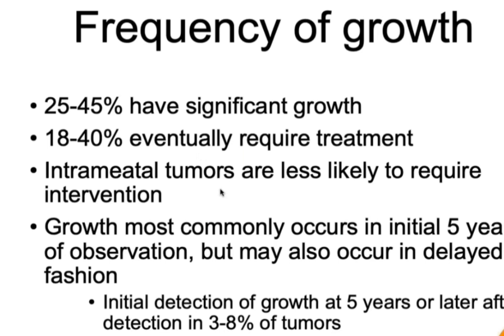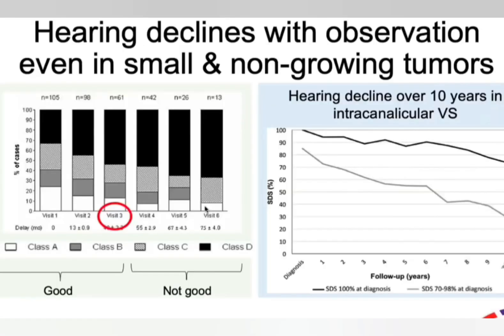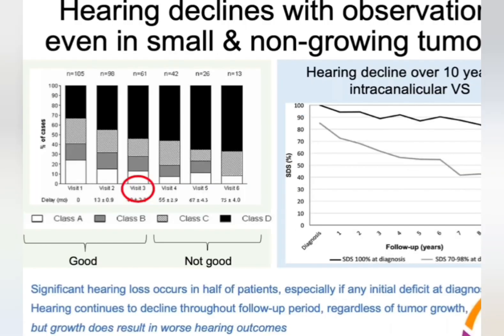If tumours grow rapidly — more than one millimetre per year — this usually occurs within the initial five years of detection. If they do not grow rapidly within the first five years, they probably will not grow rapidly after that. Importantly, even if the tumour is slow growing or does not grow at all, it can still lead to hearing loss. That is why if acoustic neuroma is detected in a younger individual, it is best to proceed with treatment rather than observation.